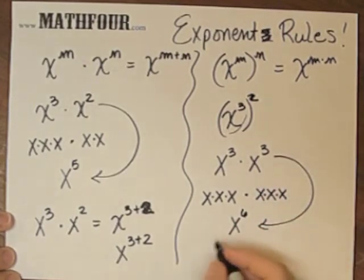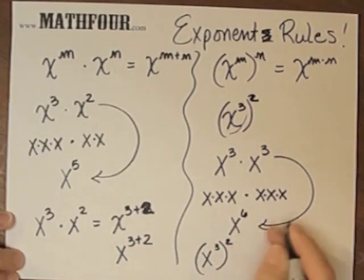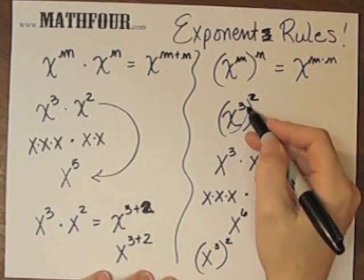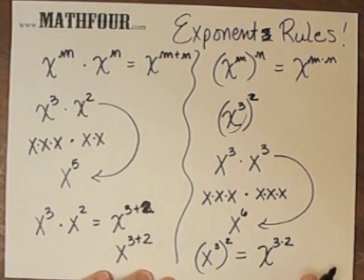So from this, I can remember this is x to the 3 squared, which is my original problem up here, means x to the 3 times 2, which is my x to the 6th.